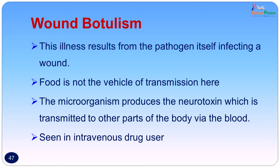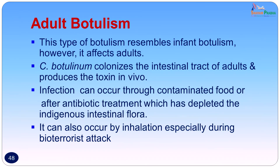Wound botulism results from the pathogen itself infecting a wound. The organism enters through the soil, multiplies in the wound, and produces a neurotoxin transmitted to other parts of the body via the blood. This is often seen in intravenous drug users who use unsterile syringes. Adult botulism resembles infant botulism but occurs in adults. Clostridium botulinum colonizes the intestinal tract of adults and produces toxin in vivo — this can occur through contaminated food or after antibiotic treatment that depletes indigenous intestinal flora, allowing Clostridium botulinum to multiply and produce toxin. It can also occur by inhalation, specially during a bioterrorist attack.